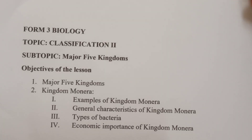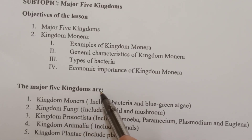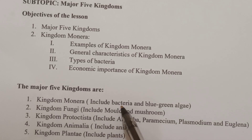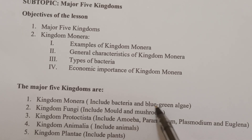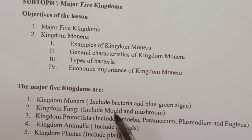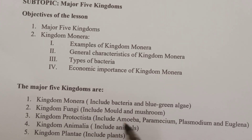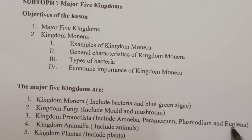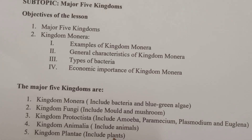The major five kingdoms: kingdom Monera — examples include bacteria and blue-green algae. Kingdom Fungi — examples include mold and mushroom. Kingdom Protoctista — examples include amoeba, paramecium, plasmodium, and Euglena. Kingdom Animalia includes all animals, including us. Kingdom Plantae — examples include all plants.